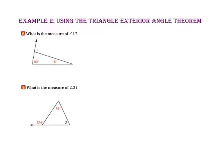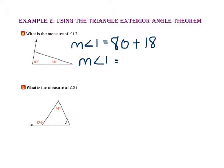In example 2, we will use the triangle exterior angle theorem. Looking at part A, we want to know the measure of angle 1. Since angle 1 is an exterior angle, we know it has the same measure as the sum of its remote interior angles, 80 degrees and 18 degrees. So the measure of angle 1 equals 80 plus 18, or 98.